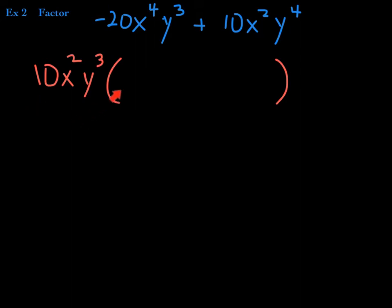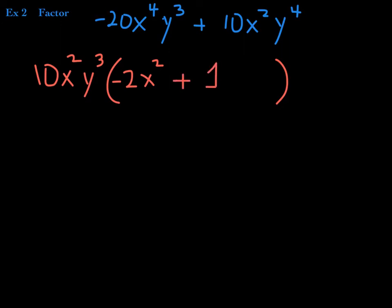10 times what is negative 20? 10 times negative 2. If you have 4 x's and factor 2 out, 2 are left — so x squared. If you had y to the 3rd and factored out all y cubed, no y's remain. 10 times positive 1 gives 10. Started with x squared, factored out x squared — no more x's. Started with y to the 4th, factored out y cubed — 4 minus 3 leaves y to the 1st.